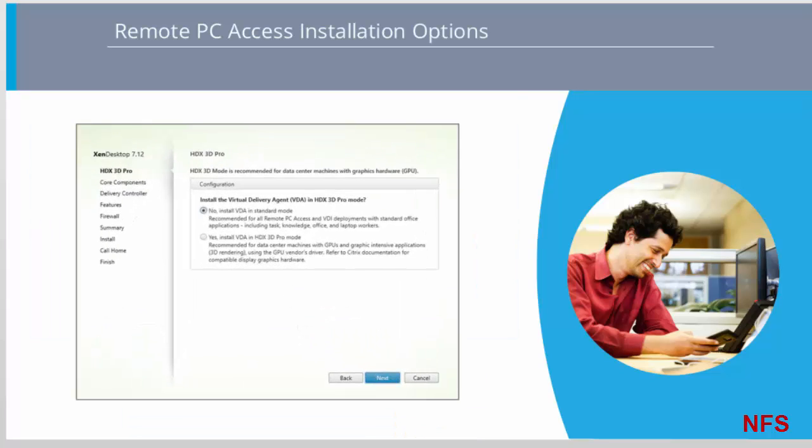The new VDA Workstation Core Setup standalone VDA installer is available for download from the Citrix website. Use your Citrix account credentials to access the ZenApp and ZenDesktop 7.12 download page. Here we see the initial setup page for the VDA Workstation Core Setup installer, which includes standard options for HDX 3D Pro mode and remote assistance.